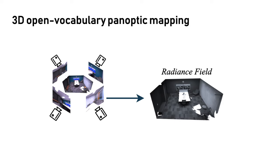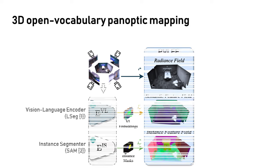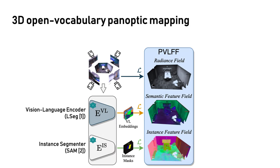In order to understand a scene, we propose Panoptic Vision Language Feature Fields, which learns a radiance field from post images and simultaneously learns semantic and instance feature fields from 2D proposals computed by pre-trained models.